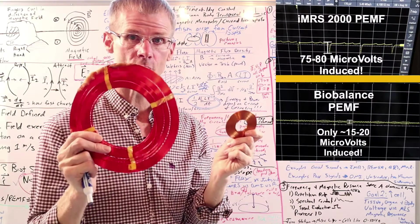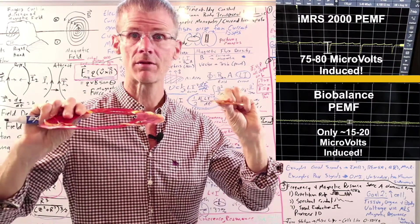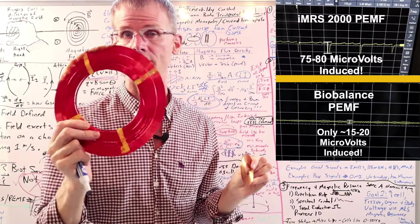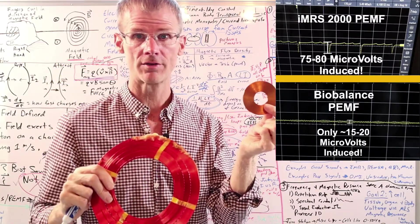Even though this is five gauss and this is 0.7 gauss, interestingly, the magnetic fluxes are about the same. But the amount of induction is four times greater than the IMRS than is in the bio balance.